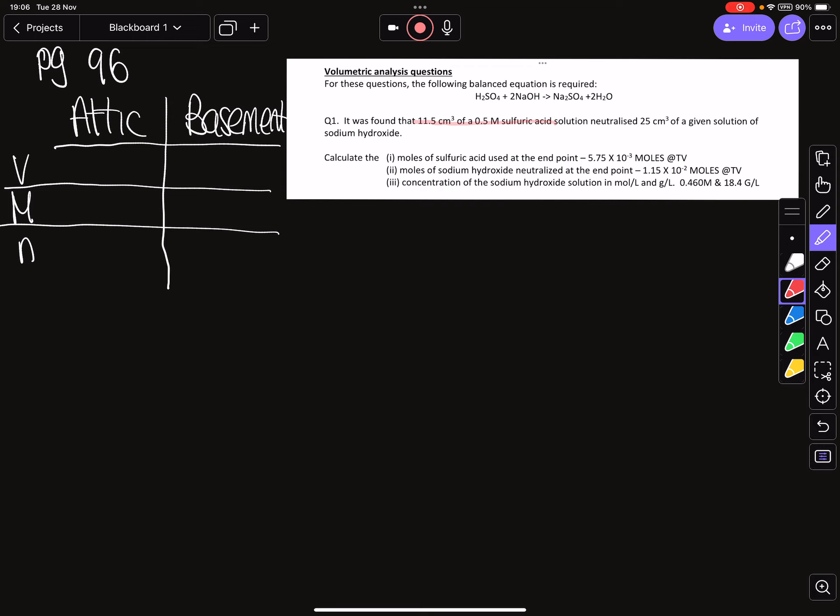So we have 11.5 centimeters cubed, we have a 0.5 big M concentration, and our ratio from our equation for sulfuric acid is H2SO4. Then looking at what are the other numbers that are left, we now have 25 centimeters cubed of our base and we have the ratio from the equation which in this case is 2.